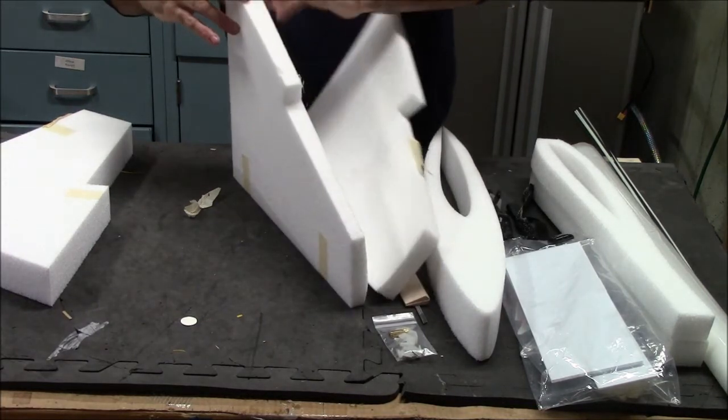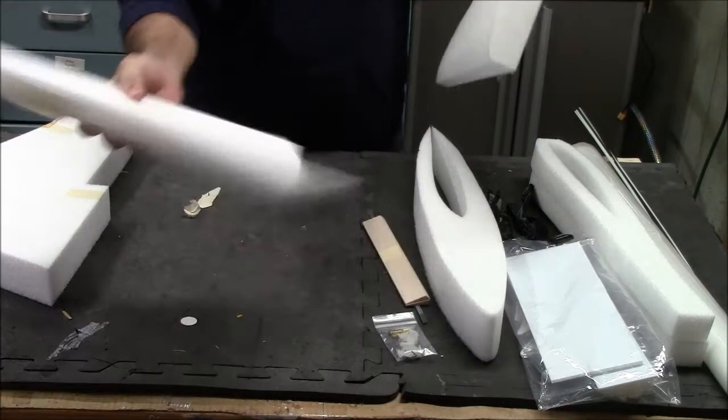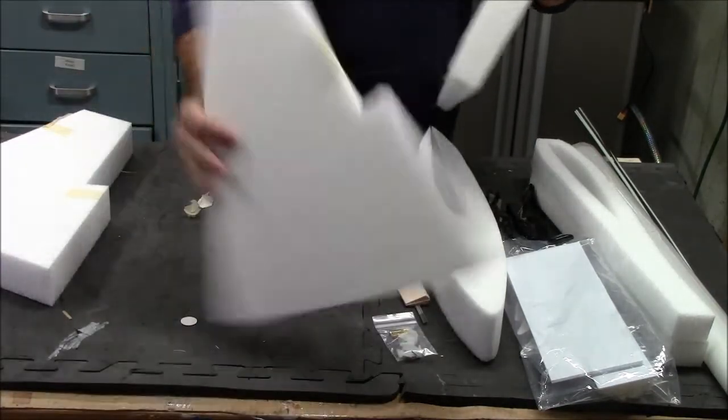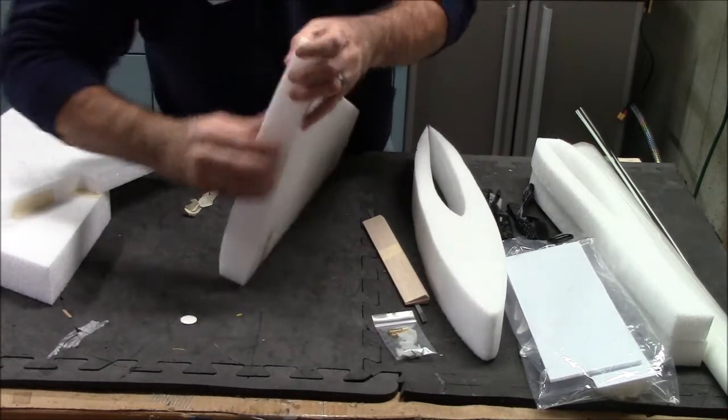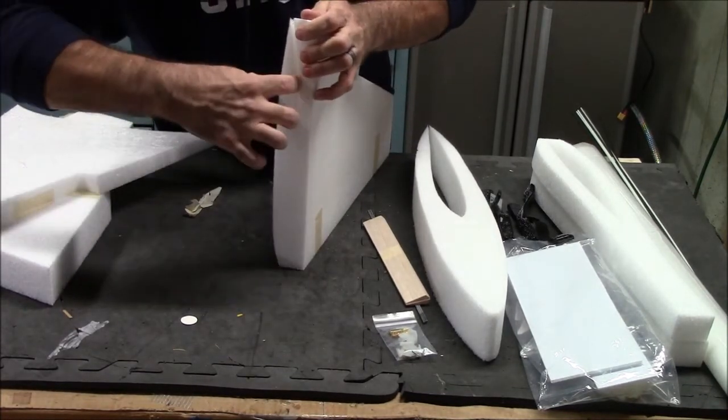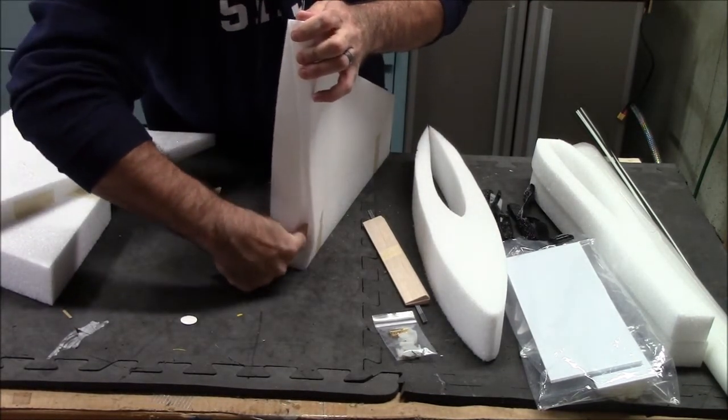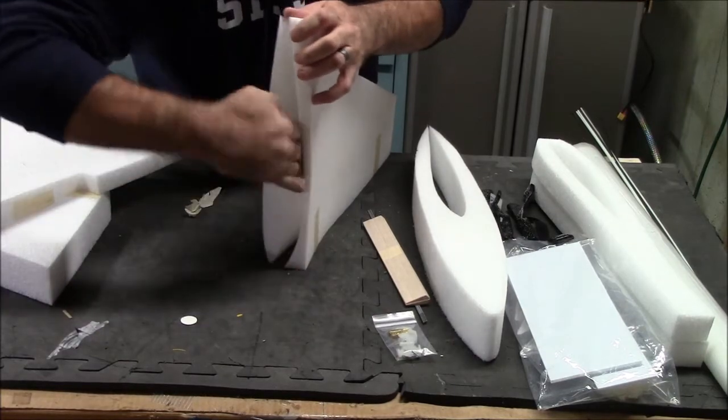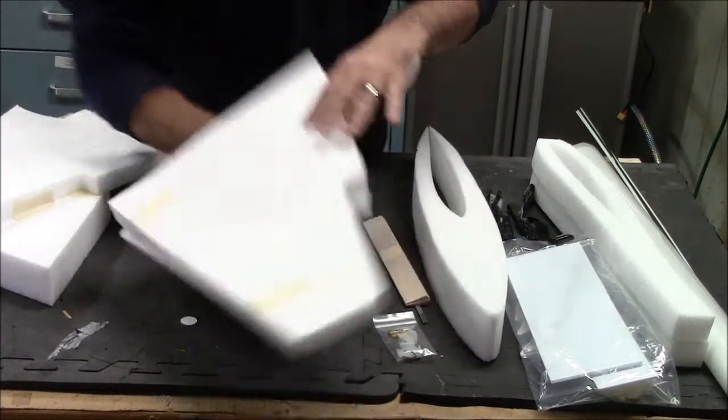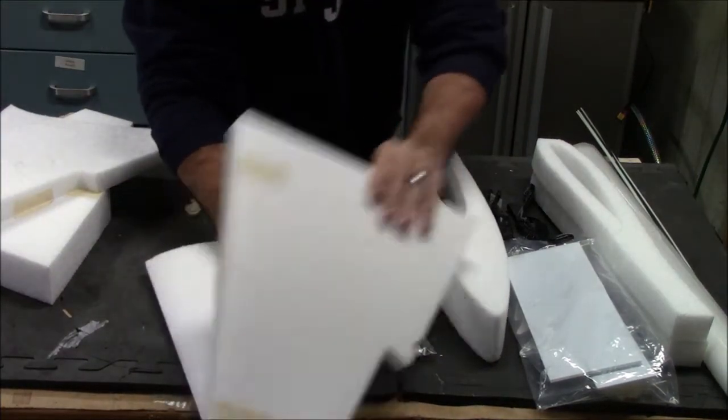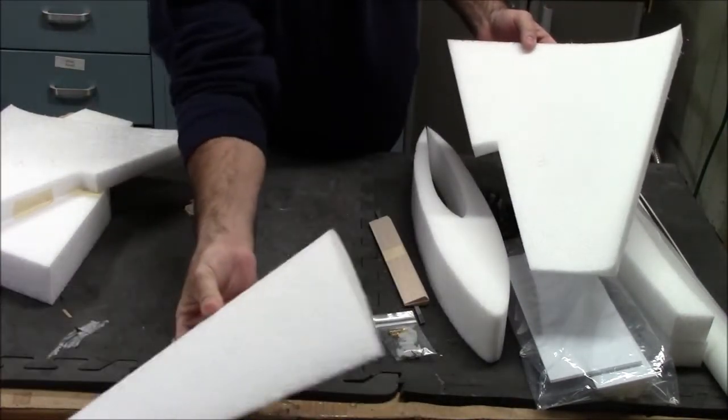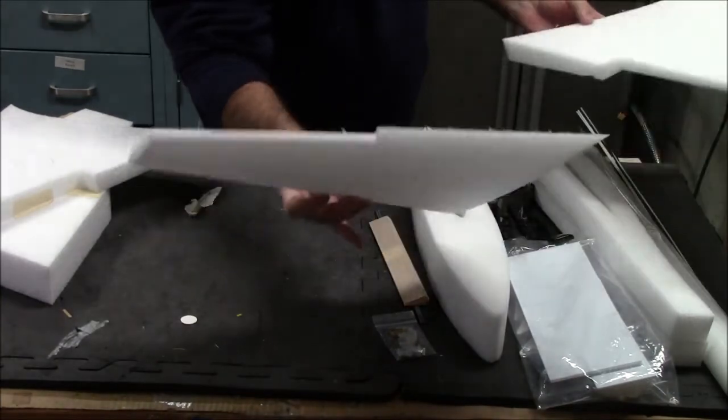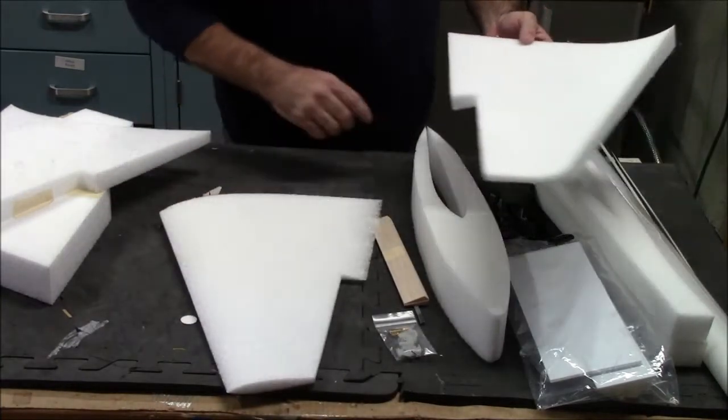So, you're just gonna pop the wing out, like that, you got the bottom half of the negative. Keep that, don't throw that away. Don't be afraid to get in there, you're not gonna hurt it. There you go. You've got one half of the twin suit wing.